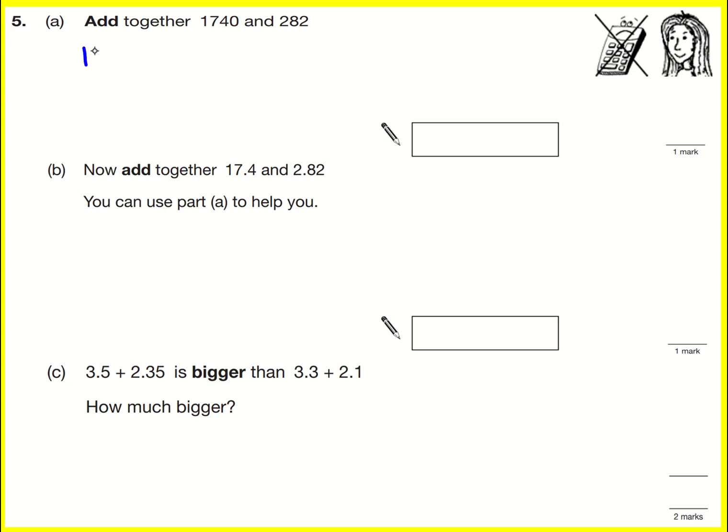Add these two numbers together, I'm going to use a column method for this because they're slightly awkward. So 0 plus 2 is 2, 4 plus 8 is 12, so 2 carry the 1.